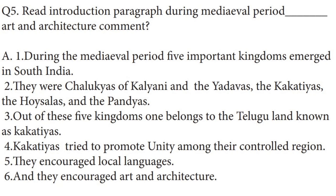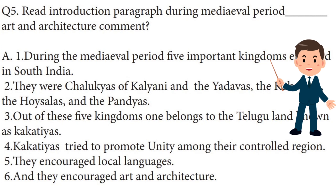Question No. 5: Read the Introduction Paragraph on the Medieval Period Art and Architecture. Answer. During the Medieval Period, five important kingdoms emerged in South India. They were Chalukyas of Kalyani, the Yadavas, the Kakathiyas, the Hoyesalas, and the Pandyas. Out of these five kingdoms, one belongs to the Telugu land known as the Kakathiyas. The Kakathiyas tried to promote unity among their controlled region. They promoted local languages and advanced art and architecture.